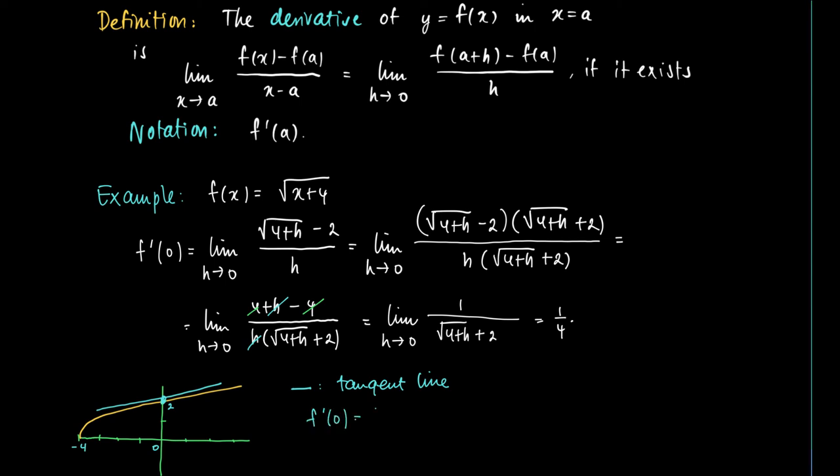The derivative equals 1 over 4, and we may put up an equation for the line L. The equation is y minus f(0) equals the slope times x minus 0, which gives us the tangent line equation: y equals 1/4x plus 2.